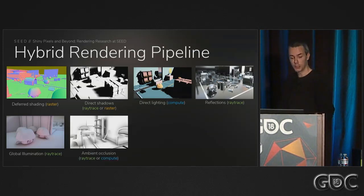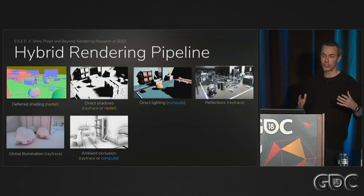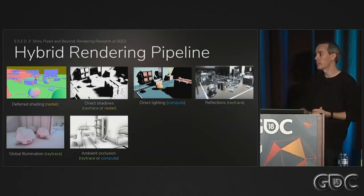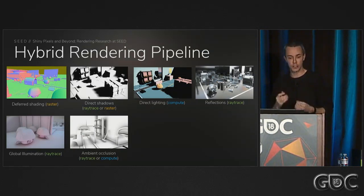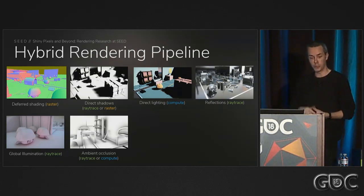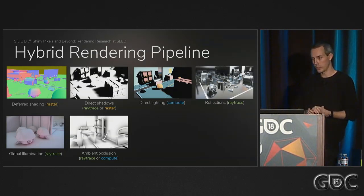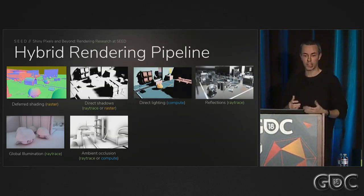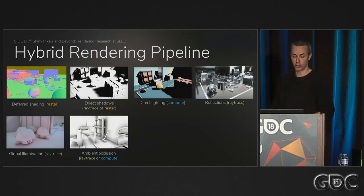Another technique we use is occlusion. The global illumination is fairly large scale and not that detailed, so ambient occlusion helps fill in creases in the scene and adds extra detail and contact shadows. We support both screen space techniques — using fairly high quality screen space occlusion — and a ray tracing mode that is more correct and accurate, but at a performance cost.